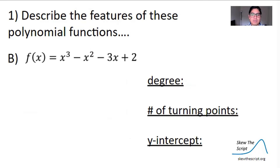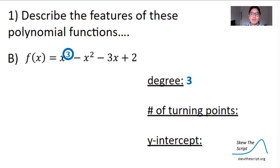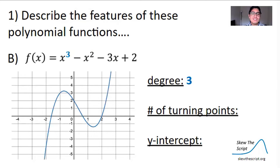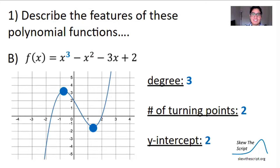Let's try 1b together, starting with the degree. Remember the degree is the largest exponent on any x term. The largest exponent here is 3, so our degree is 3 — it doesn't matter what the other exponents are when identifying the degree. Looking at the graph, the graph crosses the y-axis at positive 2, so the y-intercept is 2. Using our roller coaster analogy, there are two spots where the roller coaster changes direction, so there are two turning points.